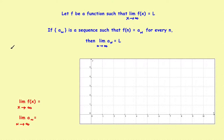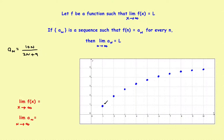Suppose we have a sequence a_sub_n = 10N divided by (2N + 9). I want to show whether this sequence converges or not — does it settle on a single number as you go way off to the right? If you plot the terms, they seem to level off at 5. So it's tempting to say the limit of this sequence as N goes to infinity would be 5, but the question is: how do you show that rigorously?